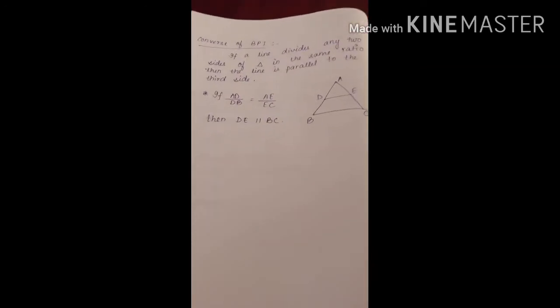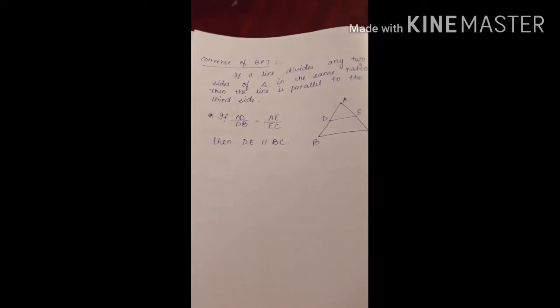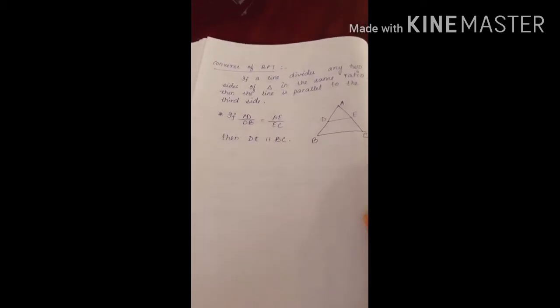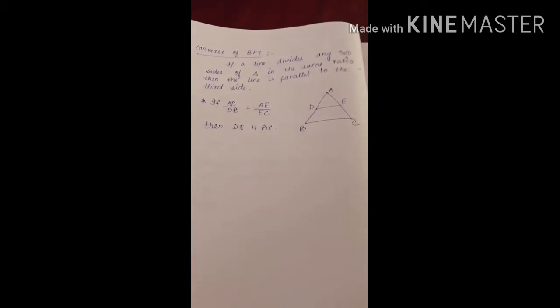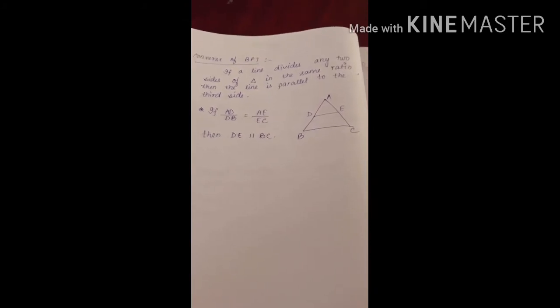In the last lecture I discussed the basic proportionality theorem. Next is the converse basic proportionality theorem. The proof of this theorem will not come in your exam, but you have to use it. So first I am going to discuss the converse of BPT: if a line divides any two sides of a triangle in the same ratio, then the line is parallel to the third side.